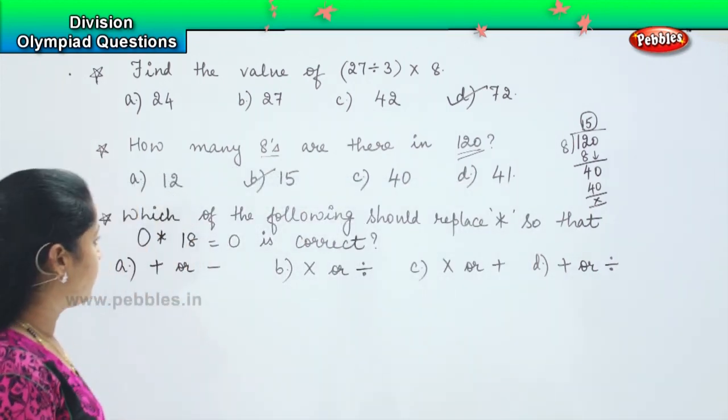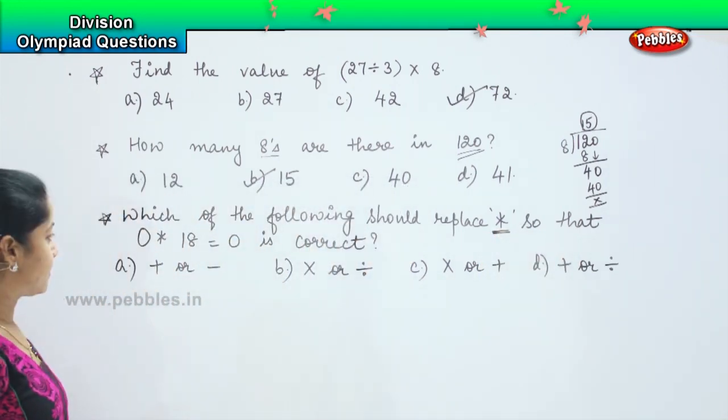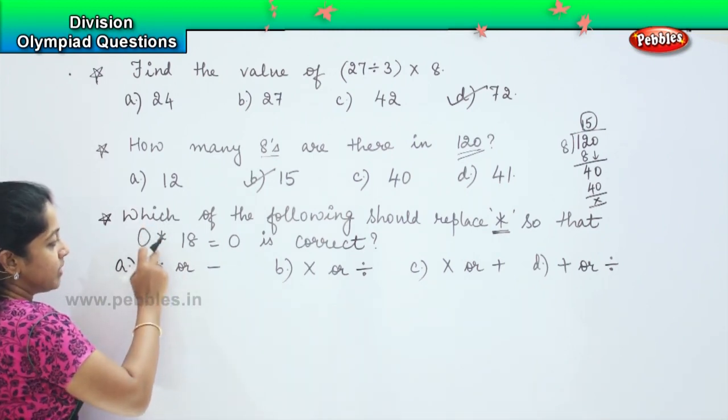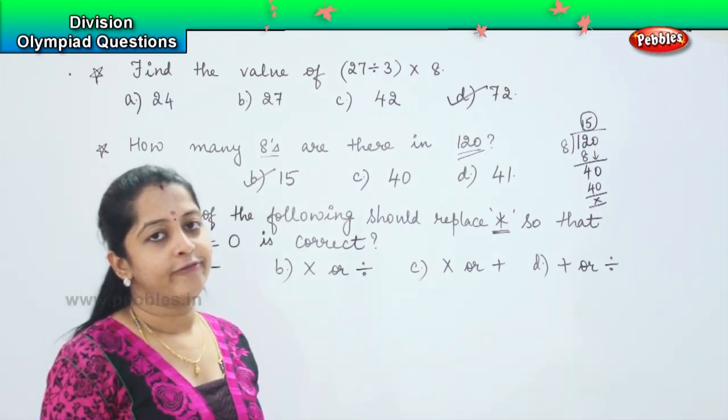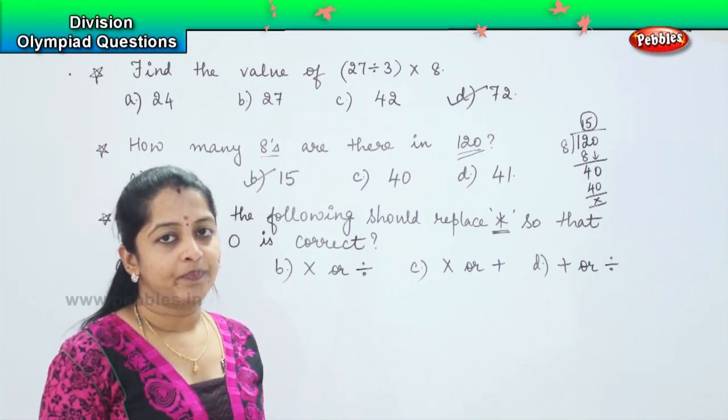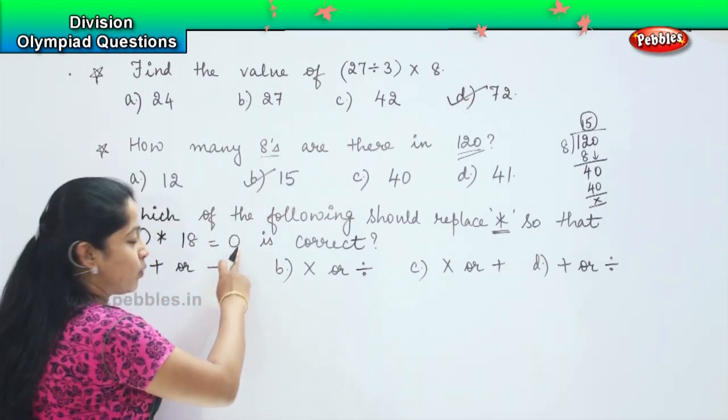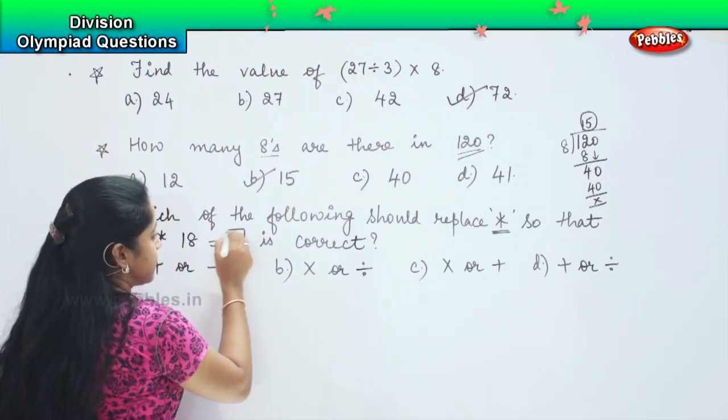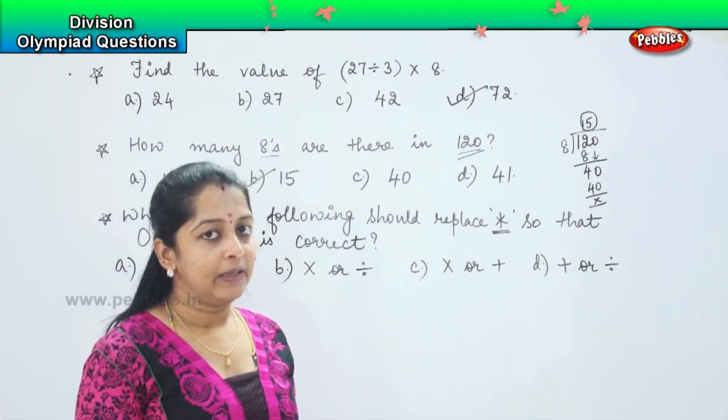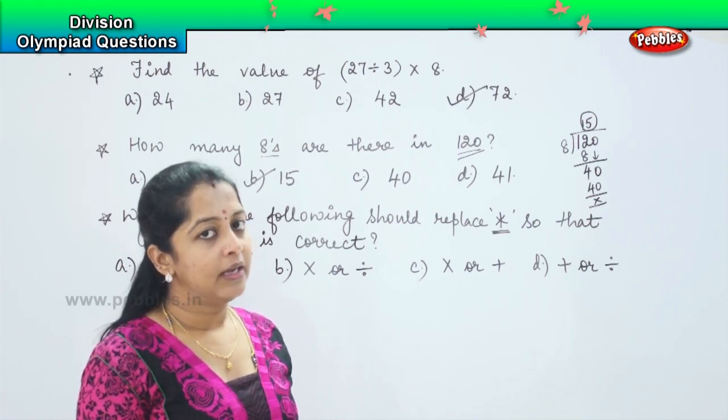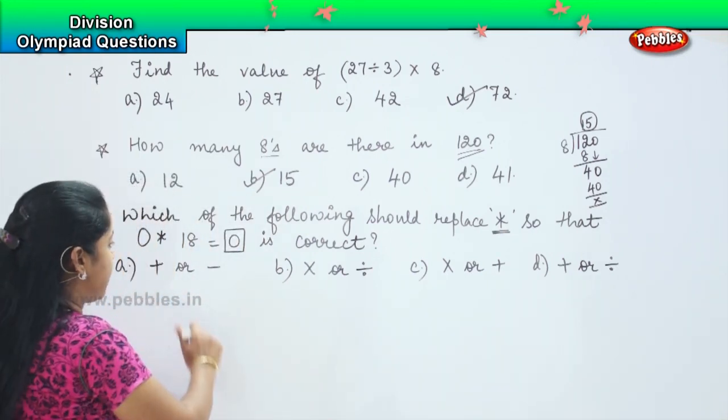So we need to find what can be replaced. So in case if I do whichever operation I do with 0, I should get the answer as 0. So we will try recollecting the properties of all the 4 which we have learnt. Coming to the addition, anything added with 0 will be the number itself. So which means the addition will not work out here because I need to get the answer as 0. Similarly, coming to the subtraction property, anything subtracted from 0 will be the number itself. Again, it does not fall correct here. So which means option A is ruled out.